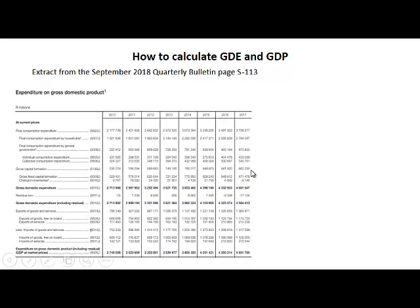We want to look at how to calculate gross domestic expenditure and gross domestic product using the quarterly bulletin. Here we show the expenditure on gross domestic product as shown on page S113 of the September 2018 quarterly bulletin.